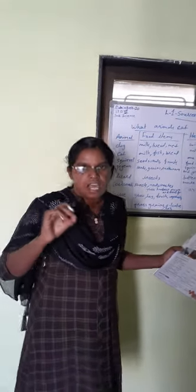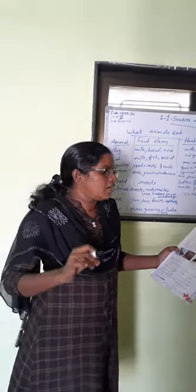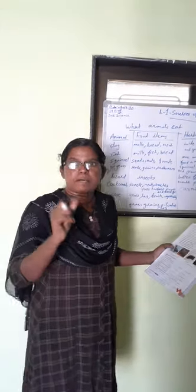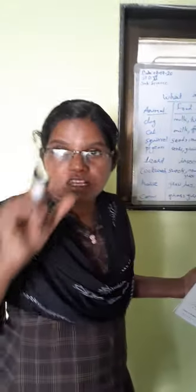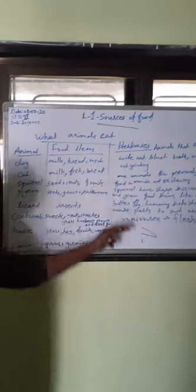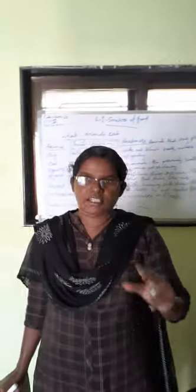Omnivorous crows have a sharp and pointed beak. Birds don't have teeth — sharp pointed beak only. So that is the food types: herbivorous, carnivorous, and omnivorous. All of you understand? Write it down and then ask me. Thank you, children.